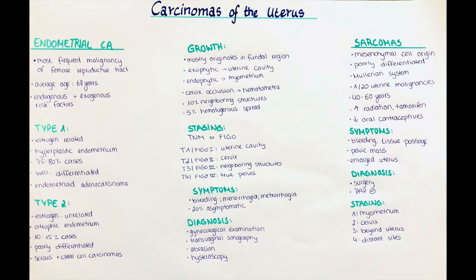Diagnosis of endometrial carcinomas is usually done by gynecological examination upon bleeding to identify the source. A transvaginal sonography can be done to evaluate the endometrium and pelvis, and in some cases the gynecologist has to perform an abrasion, hysteroscopy, or an MRI with contrast media.